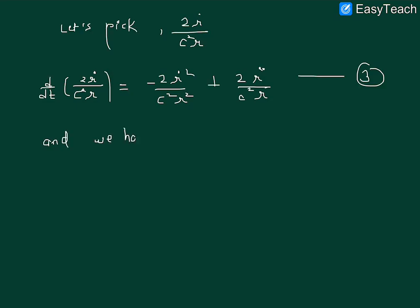And we have d by dr dot of r dot square upon c square r. That gives me two r dot over c square r. That is my equation 4.